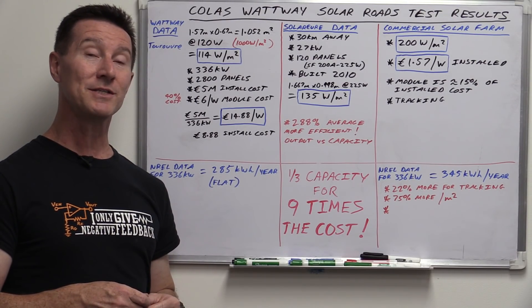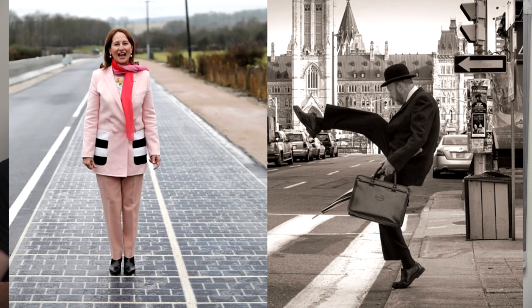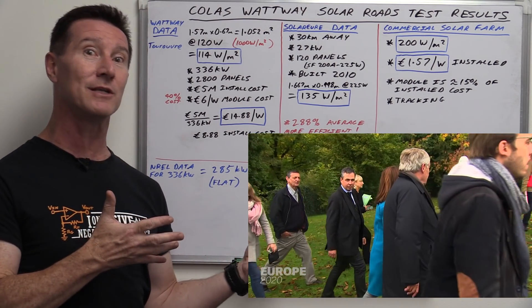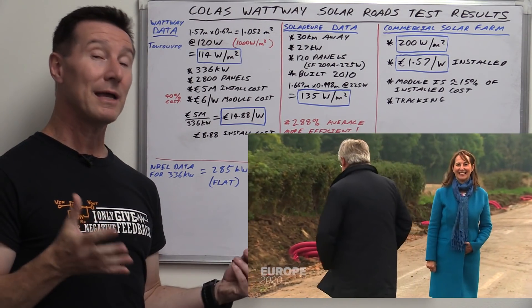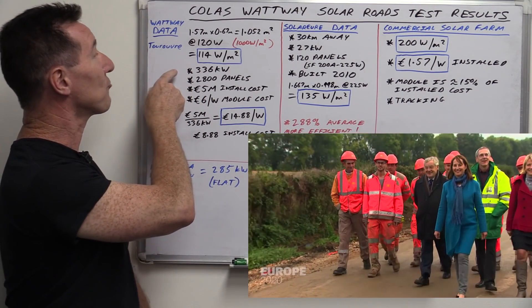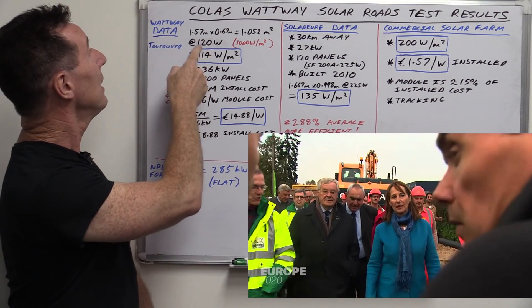So late last year in 2016, there was a huge dog and pony show. The French minister for silly walks was there at the installation of this thing and telling the world how wonderful it is and how France is going to be a leader in solar technology. Blah, blah, freaking blah. Anyway, it's a pretty big installation. It's like one kilometer long. It's 336 kilowatts, which is huge. It uses 2,800 panels, which are basically 120 watts each,